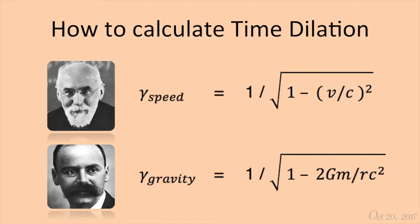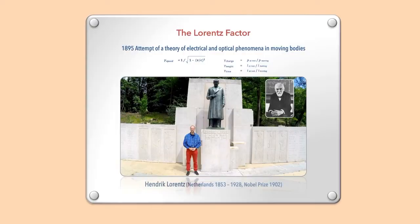I'm going to give you some examples of speed time dilation and gravitational time dilation. That's me standing next to the statue of Hendrik Anton Lorentz, here in the Netherlands, in his birthplace Arnhem. He determined the first formula for the speed time dilation. He also won the second Nobel Prize ever in 1902.